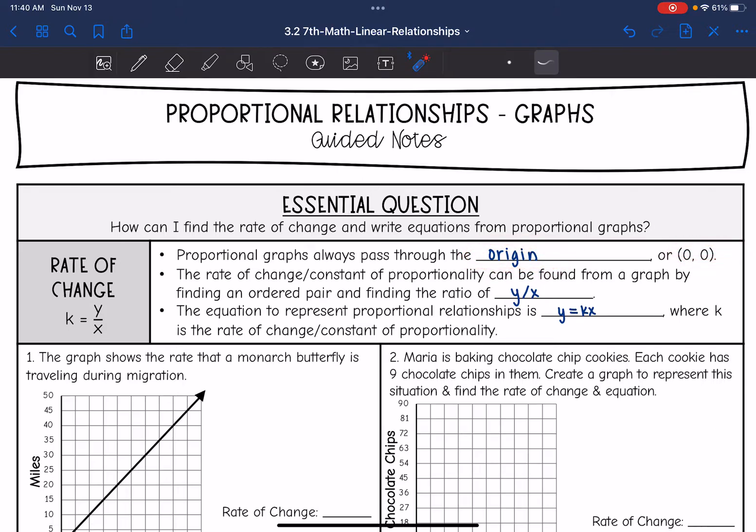So if you see a graph that is going through the origin and it's making a line, then this is how you can find the rate of change in the equation. The rate of change is going to also be the constant of proportionality of a proportional graph that passes through the origin, and it can be found by finding an ordered pair and then doing y divided by x.